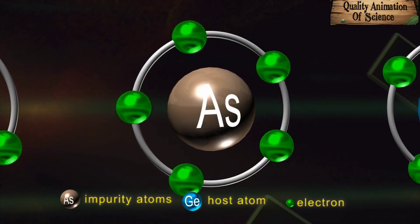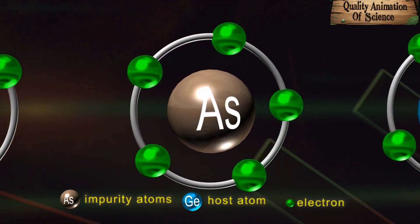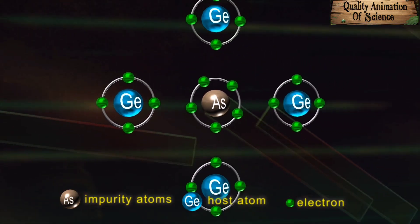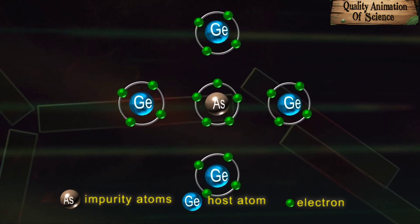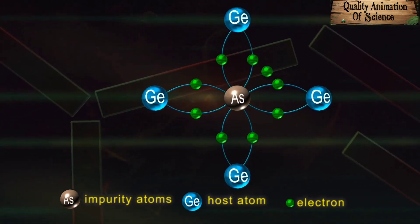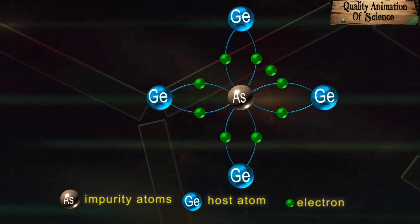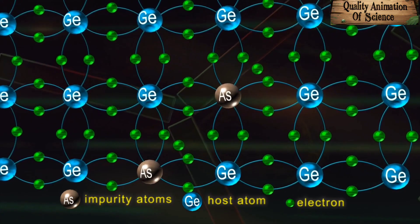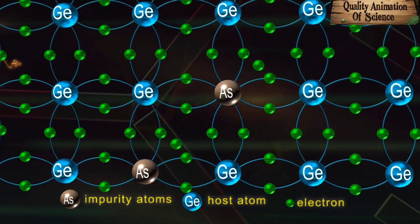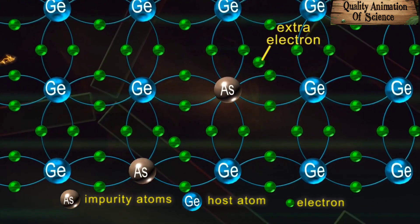Of the five valence electrons of the pentavalent arsenic, four are used up in forming covalent bonds with the nearest germanium atoms. But the fifth electron is left in the crystal as an extra electron.